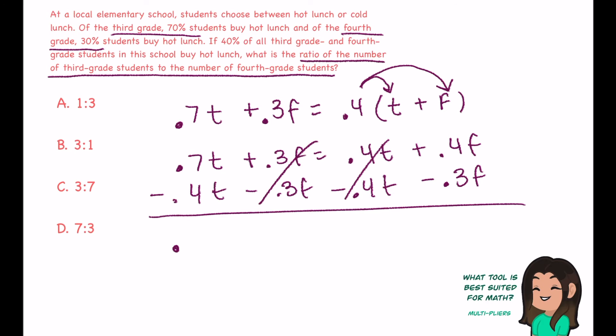Well, I know 0.7 minus 0.4 is 0.3 third graders, equal to 0.4 minus 0.3, that gives me 0.1 fourth graders. Now they try to trick you here because it wants me to say, oh, it's a three to one ratio.